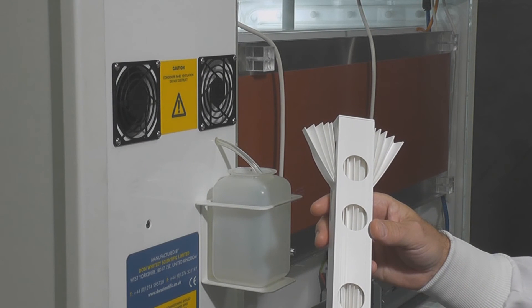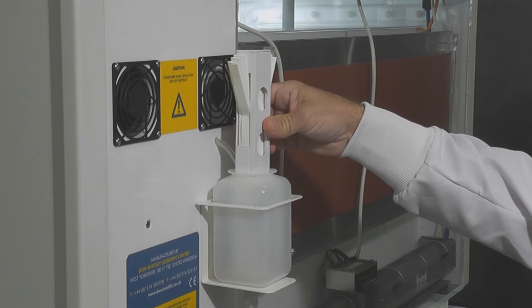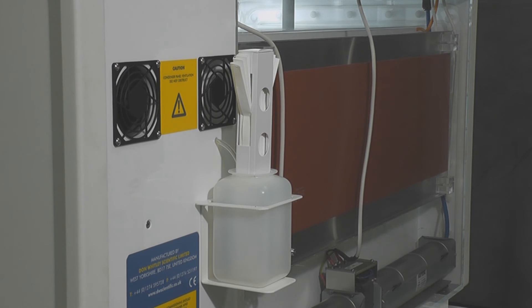The dehumidification system automatically removes excess moisture to a reservoir outside of the workstation. Water collected in the reservoir is evaporated via bacteriostatic wick.